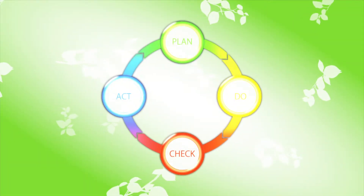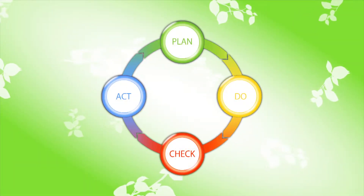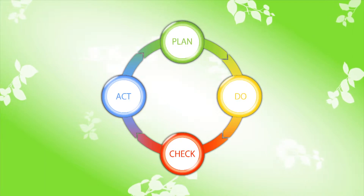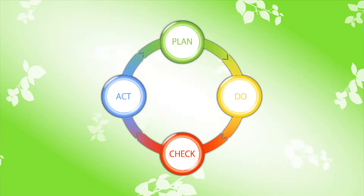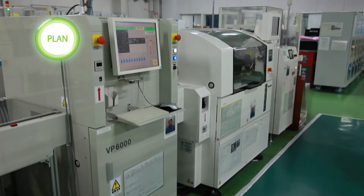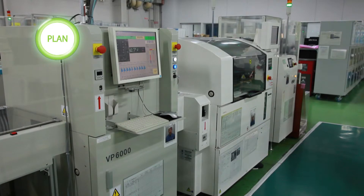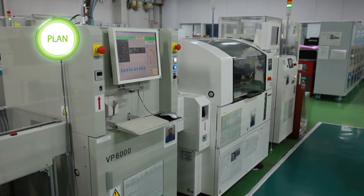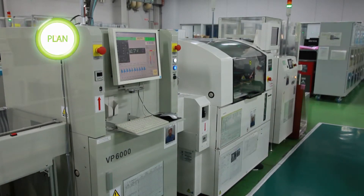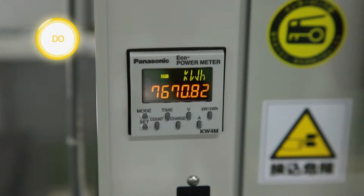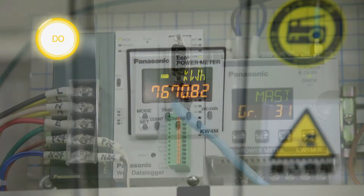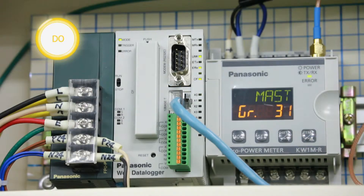The PDCA cycle is a key for energy saving. P is for Plan — you narrow down the targets to be saved of energy. D is for Do — you measure energy consumption with eco power meters and collect the data in the data logger unit.